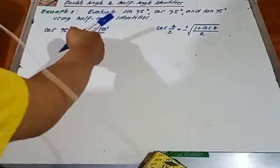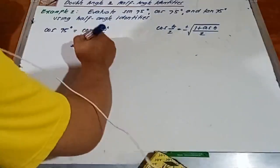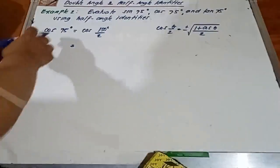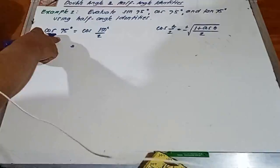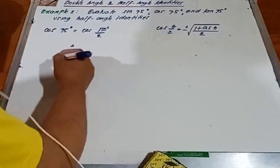Next, we plug in yung 150 degrees to sa ating theta. So this is, by the way, theta over 2 is 75 degrees and 75 degrees is located sa first quadrant. Ang cosine ng ating angle sa first quadrant is positive. So gamitin natin yung positive.